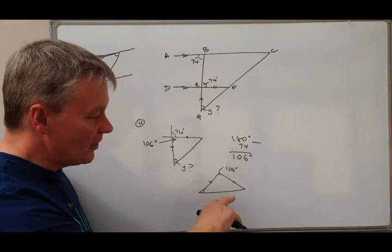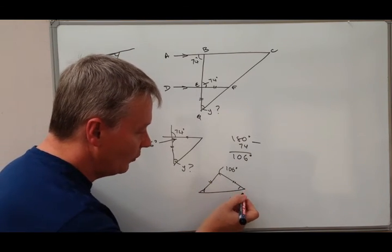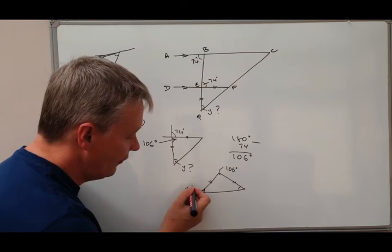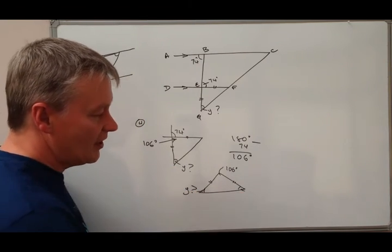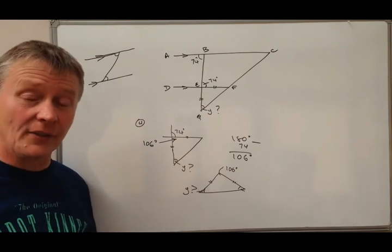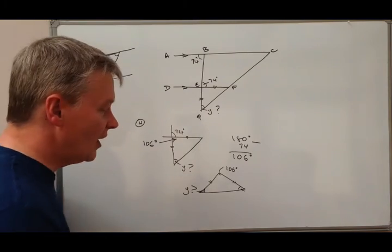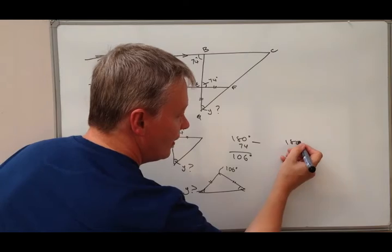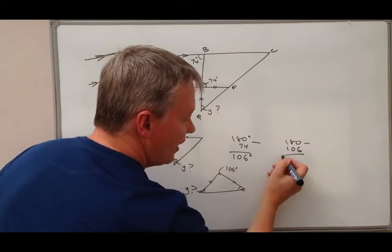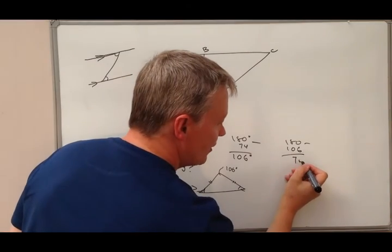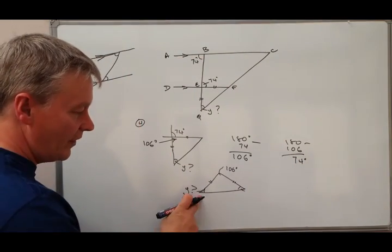This angle which is Y, the bit we're trying to find out, is the same as this angle. We know that the internal angles of a triangle add up to 180 degrees, so what I've got here is 180 degrees minus 106, which is the angle at the top. That leaves me with 74 degrees.